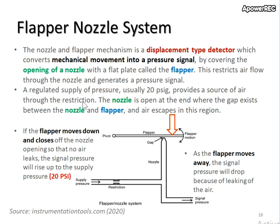The nozzle is open at the end where a gap exists between the nozzle and flapper. Here is the gap, so air can escape in this region within the gap. If the flapper moves downward in this direction, it closes the nozzle so that no air exits.